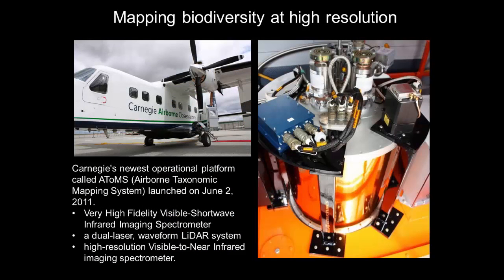The Carnier Institute at Salford University has been using a very high-fidelity imaging spectrometer to map biodiversity based on the concept of spectronomics. Here you have a picture of the aircraft and one of the sensors mounted on it — the very high-fidelity visible shortwave infrared imaging spectrometer that measures wavelengths from visible to shortwave infrared. It also has a dual laser full waveform LiDAR system and a high-resolution visible to near-infrared imaging spectrometer.